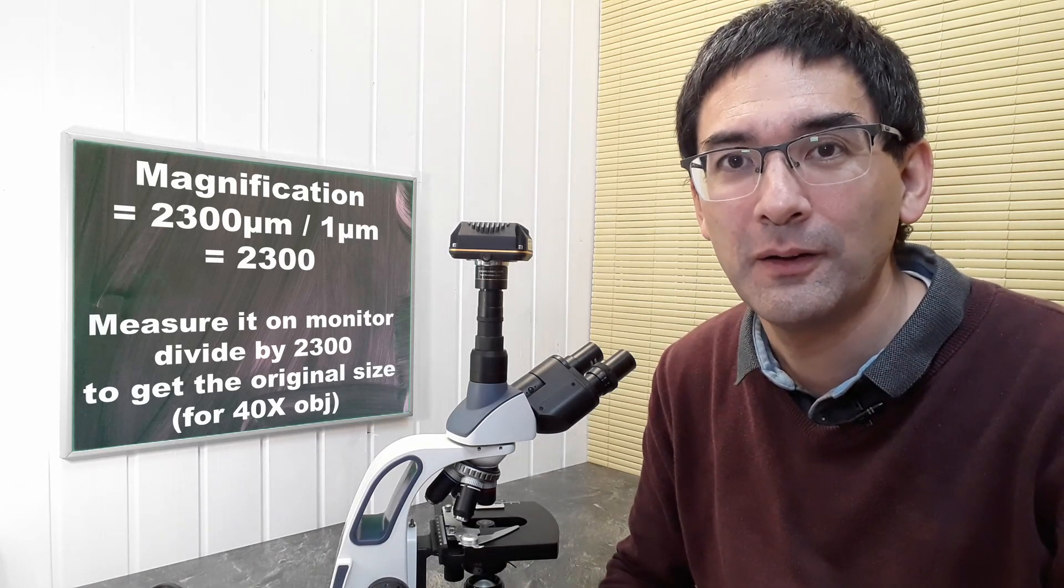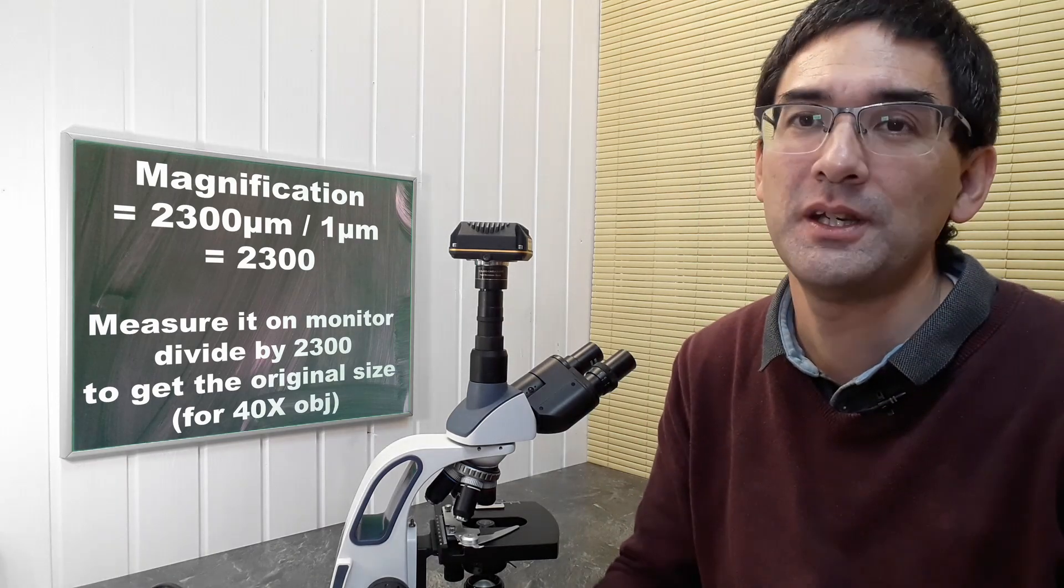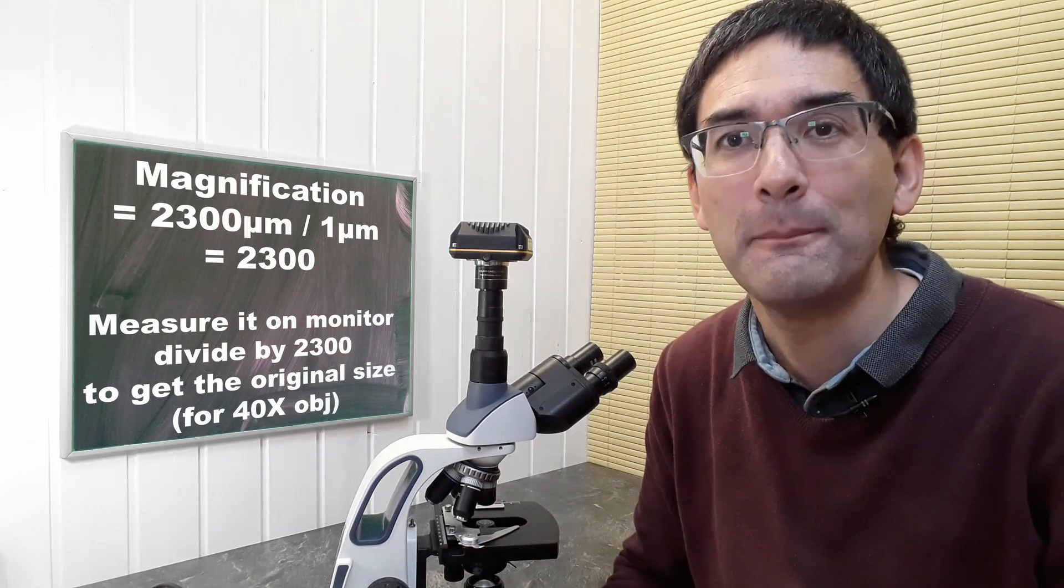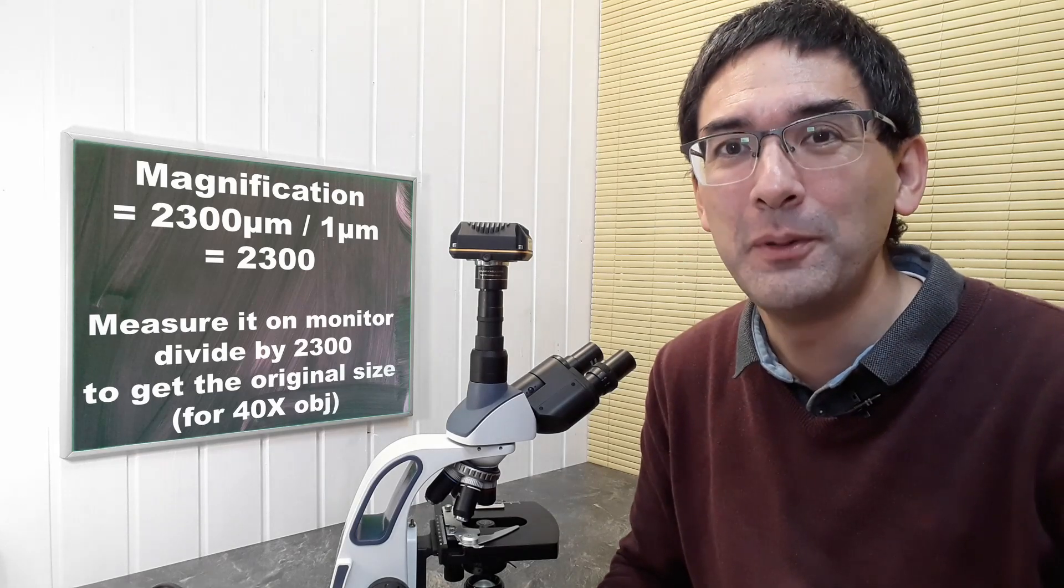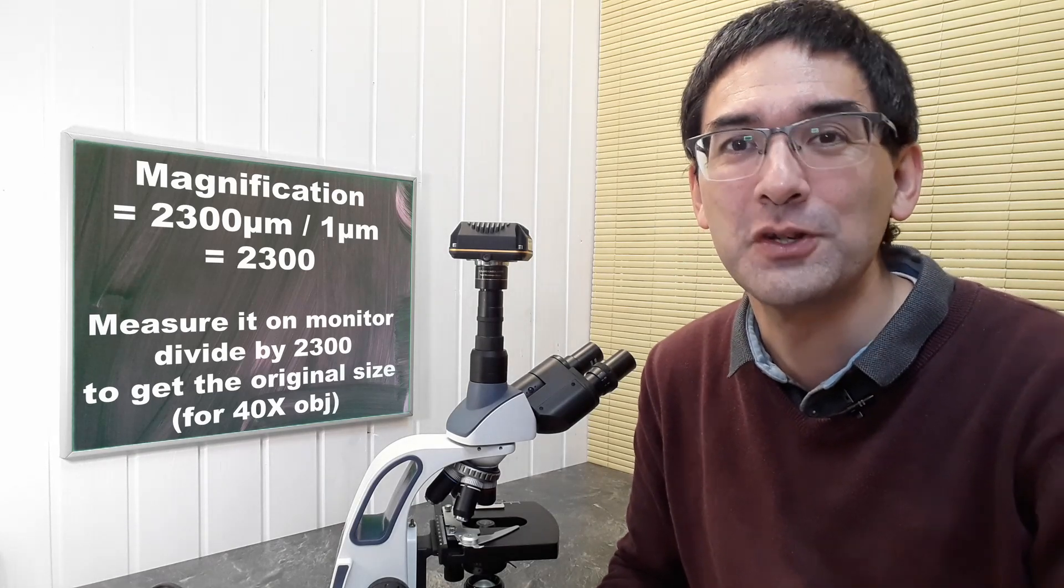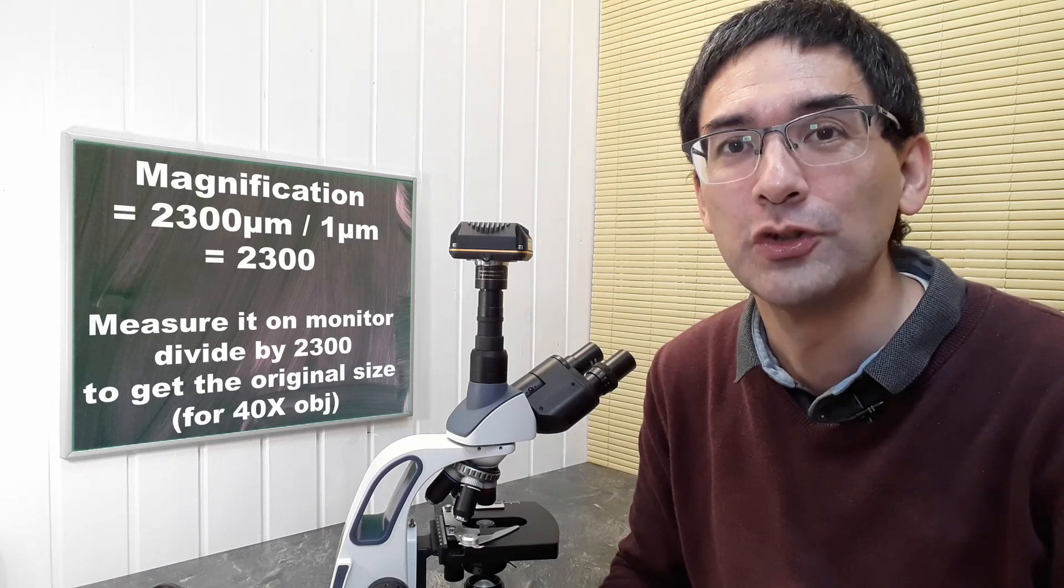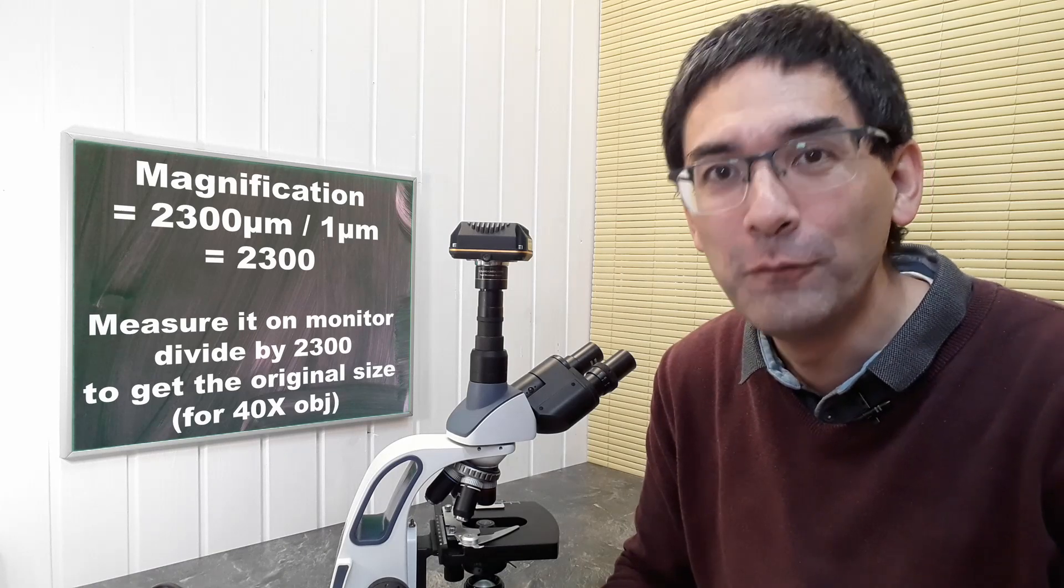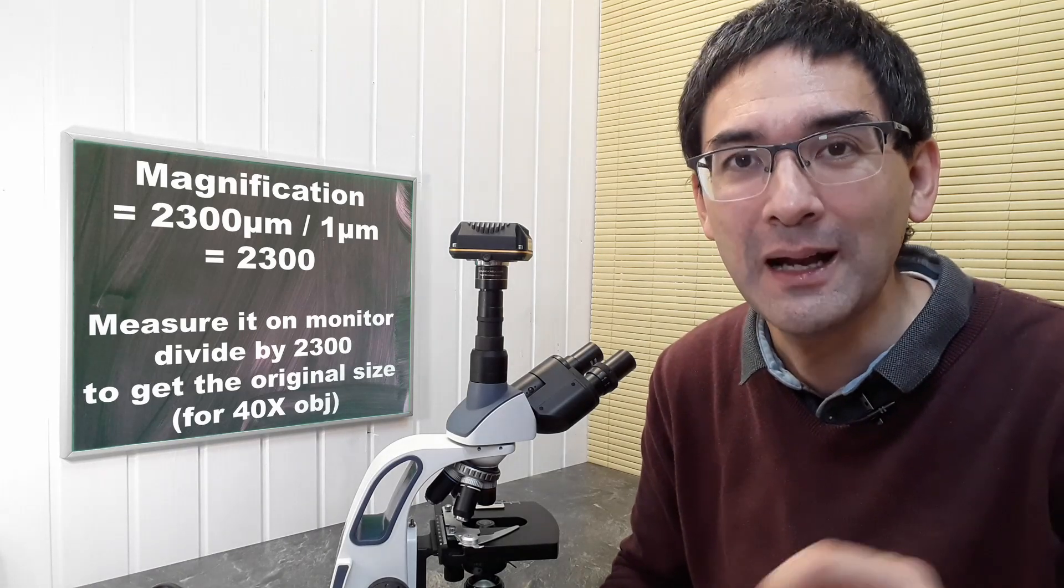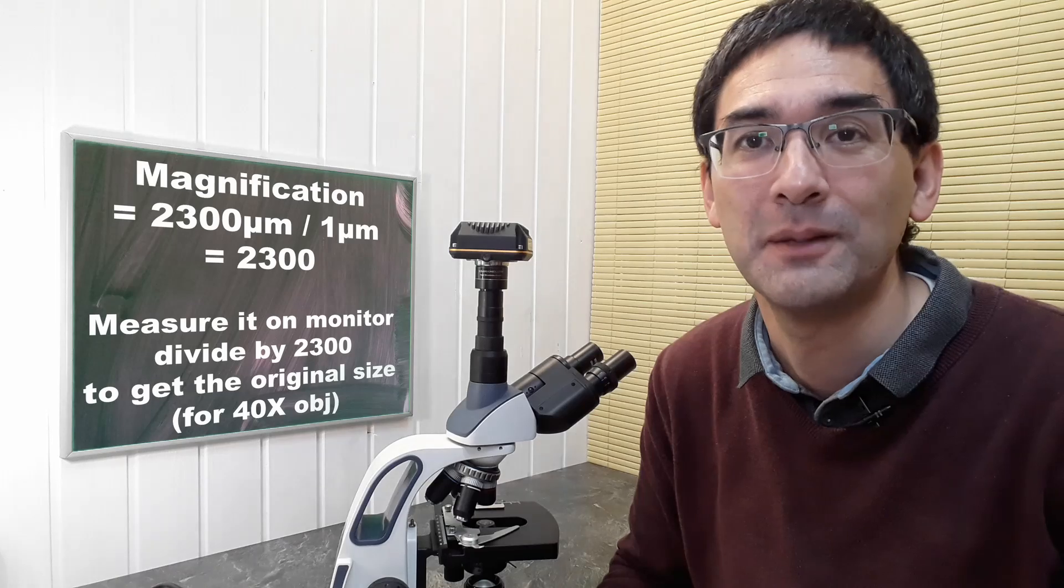We can now calculate the total magnification. We divide the 2.3 millimeters, which is 2300 micrometers, by the one micrometer original bacterial size to get a total magnification of 2300 times for this particular system and 40 times objective.